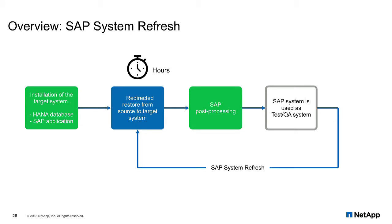When we look at the workflow of an SAP System Refresh operation, there are actually three main steps. First, there is an initial one-time preparation of the target system, which is the installation of the HANA database and the SAP application. With a standard approach, the second step is a redirected restore of the source database to the target system. With a file-based backup, this restore operation will typically take multiple hours, depending on the size of the database. The next step is the SAP post-processing, which can also be very time consuming when executed manually.